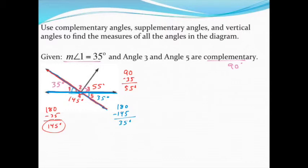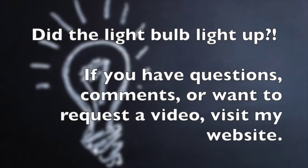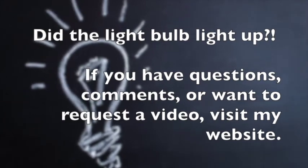For angle two, since there's a right angle on one side and they make a straight line, the other side must also be a right angle, so angle two is 90 degrees. You can also verify by summing all angles around the figure: 360 minus 35 minus 145 minus 35 minus 55 equals 90. Many approaches work — just know your vocabulary: complementary is 90, supplementary is 180, and vertical angles are congruent to each other.